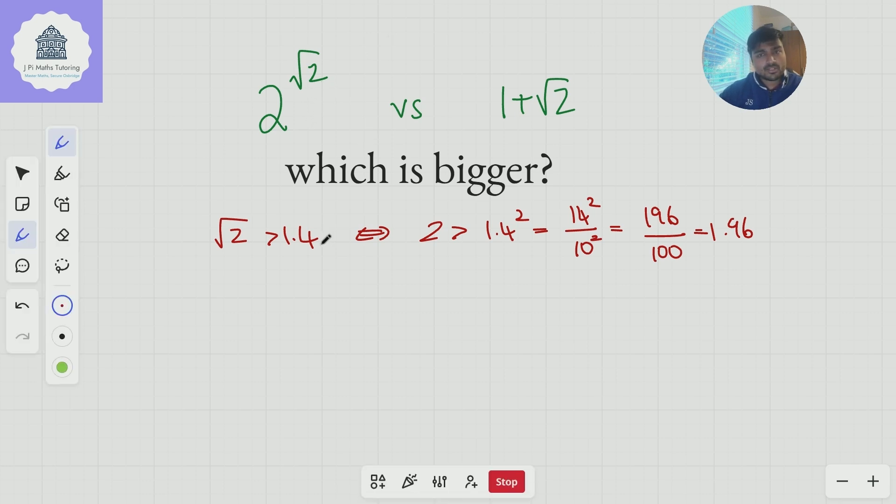So root 2 we know is approximately 1.4, slightly bigger than it, and the idea here is what I want to do is raise both sides of this to some integer power, and I want to do this in such a way so that this integer power, let's call it n, that I raise both sides to makes this root 2 times n a nice number, a nice whole number. Obviously that's not possible because root 2 is irrational, but I can approximate this here.